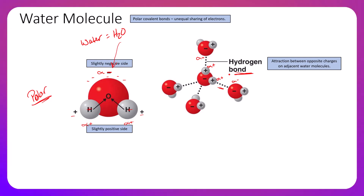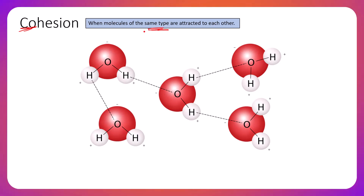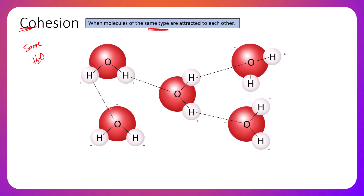Cohesion is when molecules of the same type are attracted to each other. The prefix 'co' means same, so this is the attraction of the same type of molecule to each other, forming hydrogen bonds. A water molecule with its slightly negative and slightly positive poles — the slightly positive hydrogens form hydrogen bonds with the slightly negative end of adjacent water molecules.